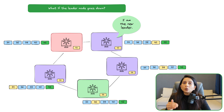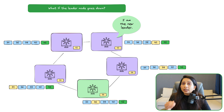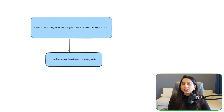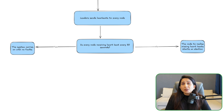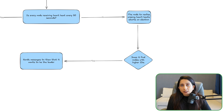So the algorithm always results in the node with the highest ID becoming the new leader. If node 42 comes back and rejoins, even node 40 would have to give up, because node 42 would say it has a higher ID. Here is a flowchart summarizing the algorithm: as long as nodes receive heartbeats, everything is fine. As soon as a node misses a certain number of heartbeats, it starts an election and sends messages to nodes with higher IDs.